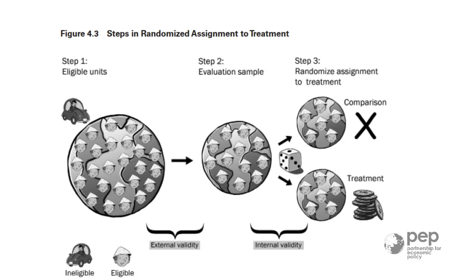A quick precision: in impact evaluation and in economics in general, when we say randomly, we refer to a very precise concept. It is actually the opposite of the word random that we use in daily life. The Oxford English Dictionary defines random as 'without method or conscious choice.' When I say randomly, I mean exactly the opposite — you need to follow a sequence of deliberate actions and steps to obtain a random sample or a random assignment.